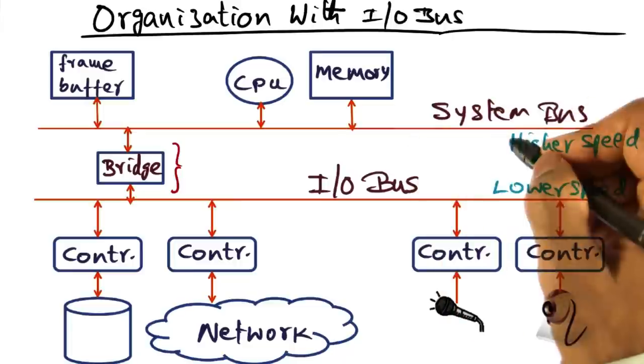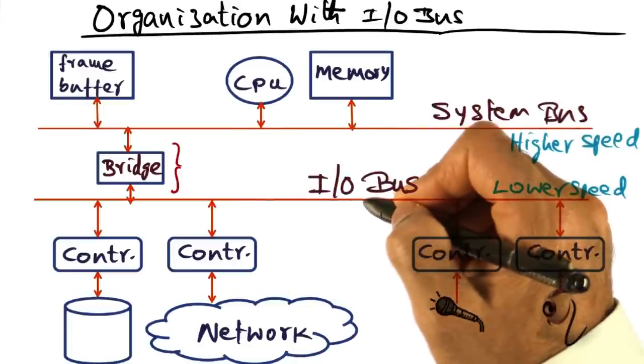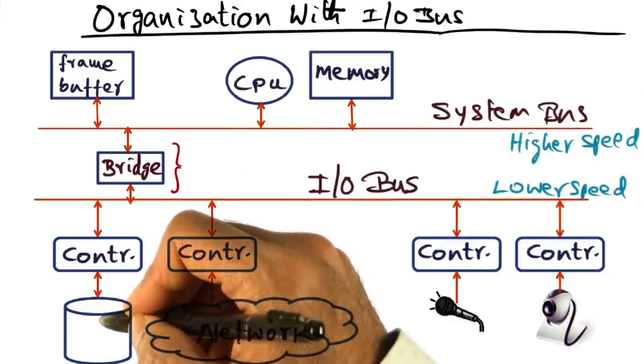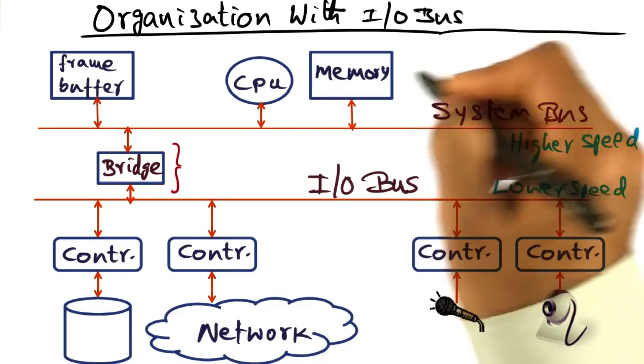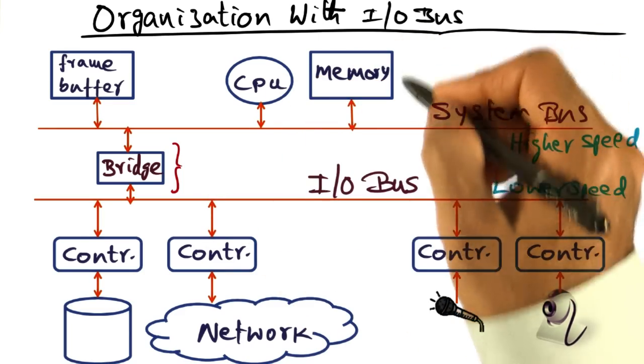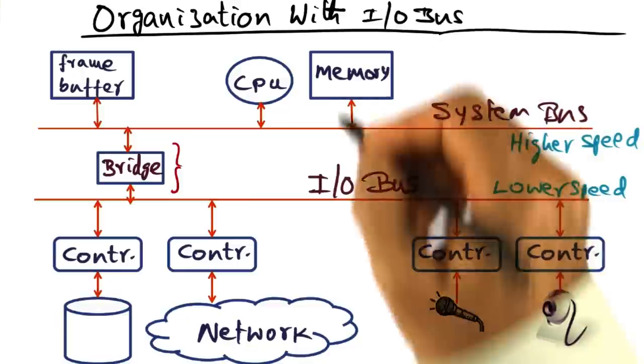Basically, these conduits allow ferrying data from the CPU to the devices, or from the devices to the CPU, and between CPU and the memory, as well as from the devices to the memory.